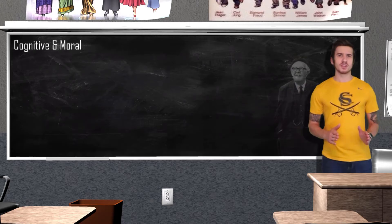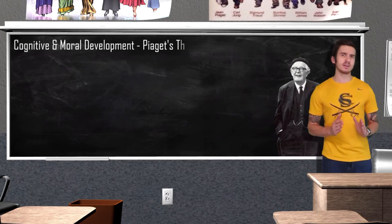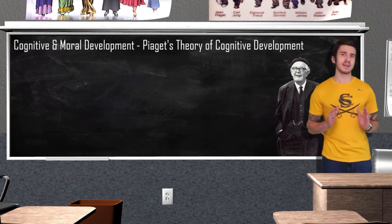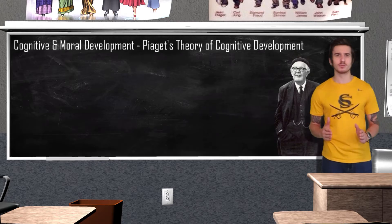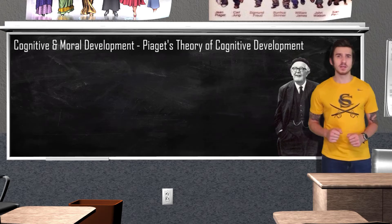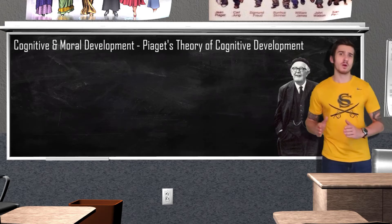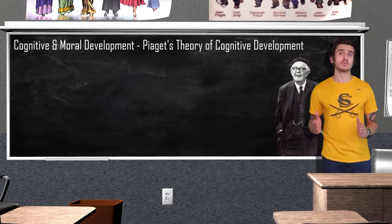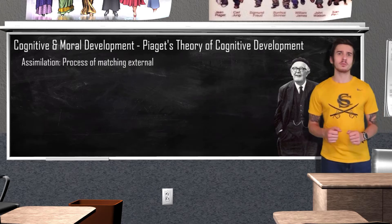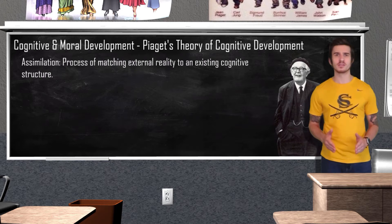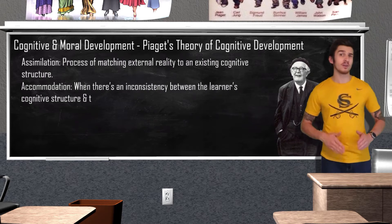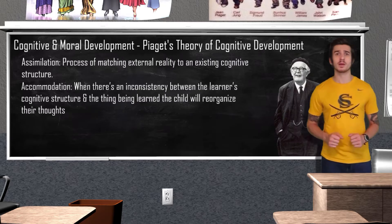Swiss psychologist Jean Piaget created a stage theory of cognitive development based on decades of careful observation and testing on children. Piaget believed that all knowledge begins with building blocks called schemas — mental representations that our brain organizes and categorizes. Through assimilation we fit new information into existing schemas, and through accommodation we modify existing schemas to fit new information.